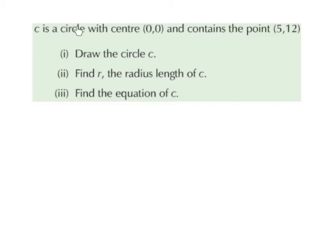Circle C has center (0, 0) and contains the point (5, 12), so (5, 12) is on the circumference of the circle. Part 1: draw the circle. Part 2: find r, the radius length of the circle. Part 3: find the equation of the circle.